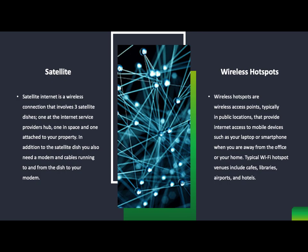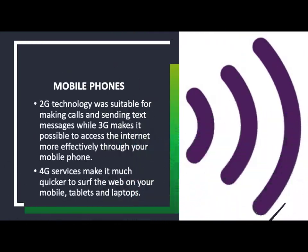A wireless hotspot involves turning your phone into a hotspot or connecting to one — for example, on a bus. These are typically unsecured with no passwords, making hacking a significant security risk. Mobile phones use 2G, 4G, or 5G to connect to data, and you can also use VoIP — Voice over Internet Protocol — to talk over the internet via apps like WhatsApp and Facebook.